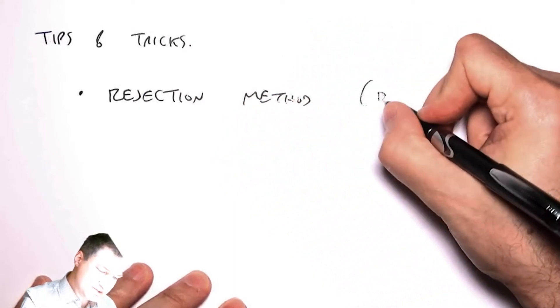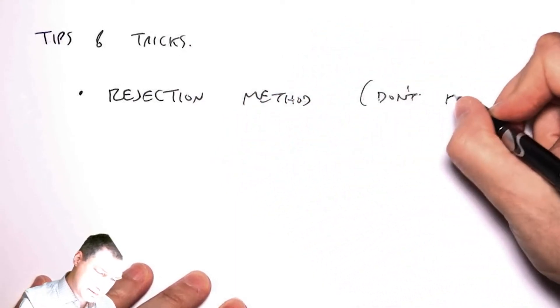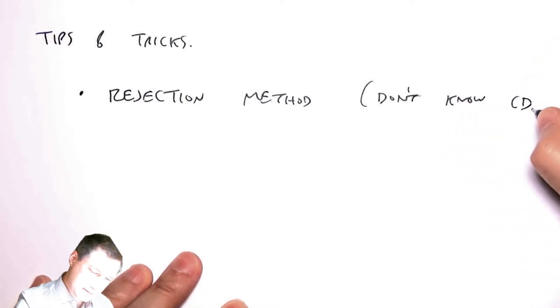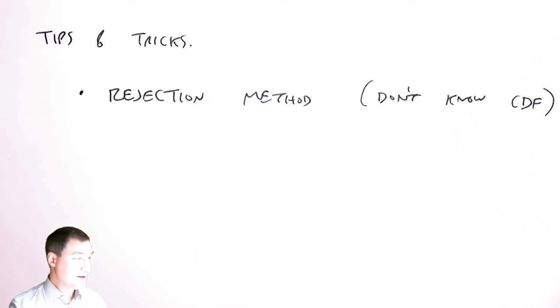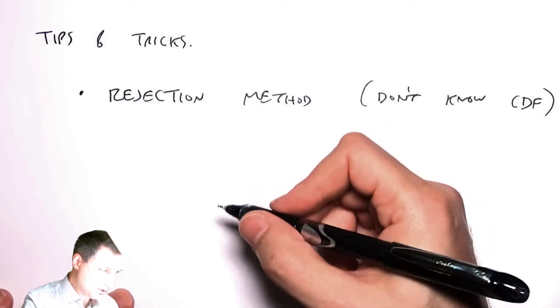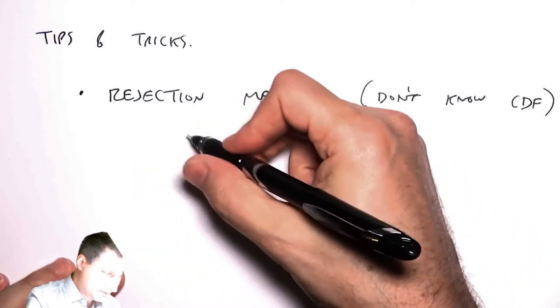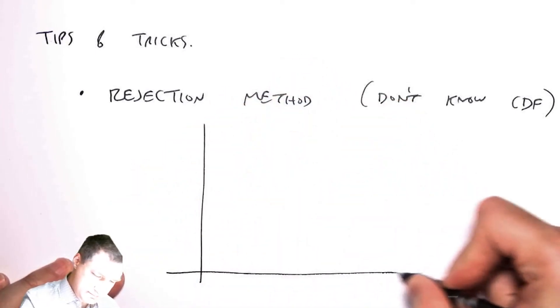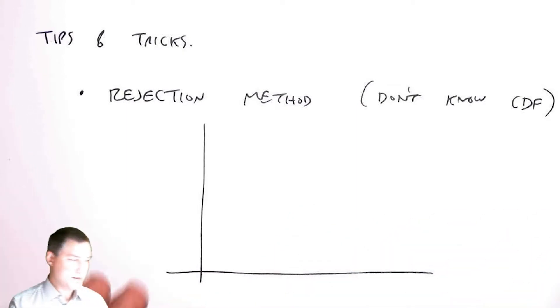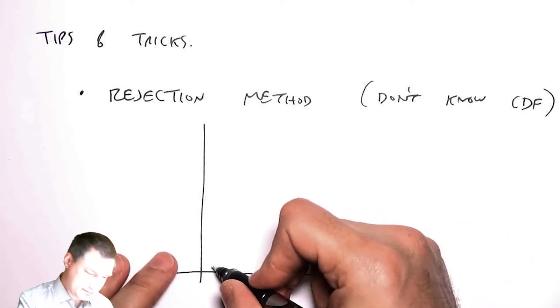One thing you can do there is called the rejection method. The idea here is super simple. So here's the process. I draw the PDF, and this only works when the PDF is bounded.